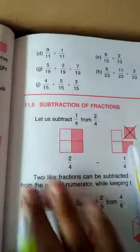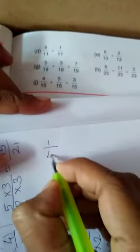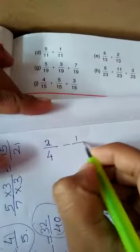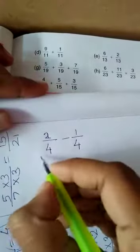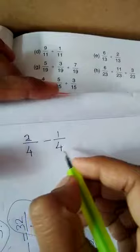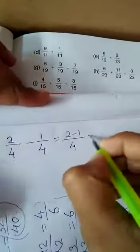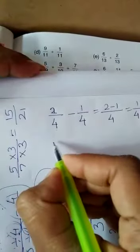The subtraction of fractions. Subtract 1 by 4 from 2 by 4. Like fractions, subtraction of like fractions. 2 by 4 minus 1 by 4 from 2 by 4. Here also it is a like fraction, same process. 2 minus 1 by 4 equals 1 by 4 is the answer. Consider another example.